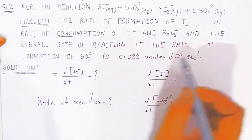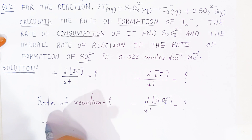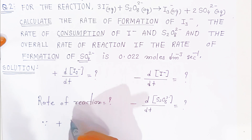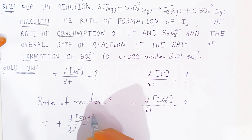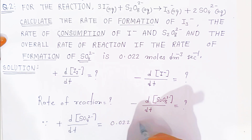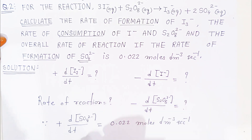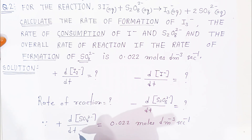If the rate of formation — the rate of formation of sulfate (SO₄²⁻) is given. That means plus d/dt of SO₄²⁻ is given as 0.022 moles per dm³ per second. So rate of formation of sulfate ion is given, and with the help of this given value we are going to find the rate of reaction first.